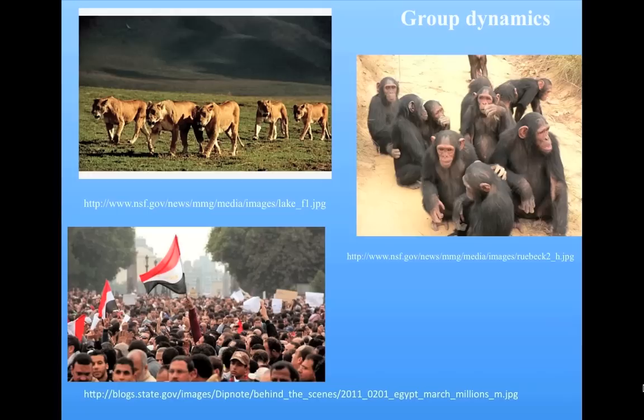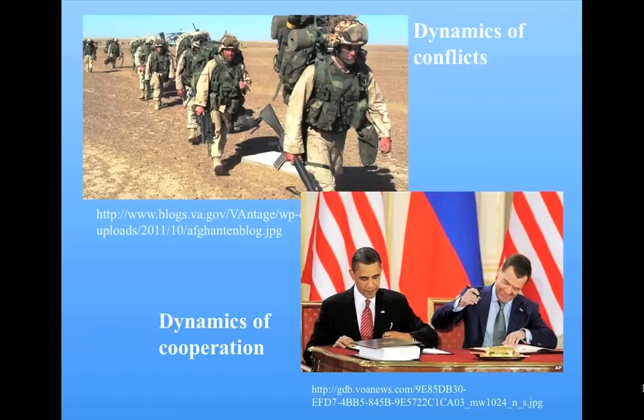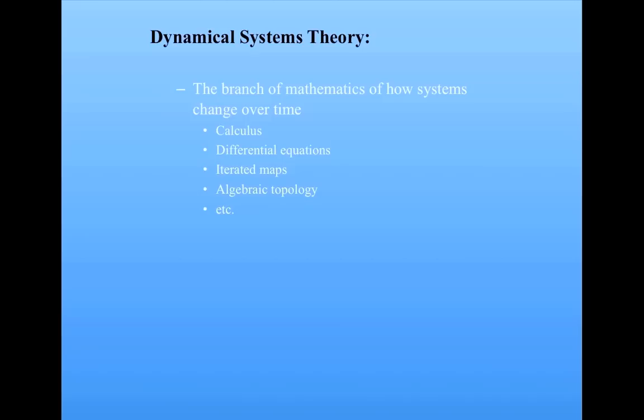Group dynamics looks at how groups of animals or humans form and how they work together to accomplish tasks. There's also a lot of work on social dynamics that includes the dynamics of conflicts and the dynamics of cooperation, for instance, among nations. Dynamics is a very general field, and it's been a huge triumph of mathematics and science to develop quantitative tools, such as differential equations, that can be applied to explain so many different phenomena. Dynamical systems theory is the general area of mathematics concerned with dynamical systems — it's the branch of mathematics which describes how systems change over time, and it includes many sub-branches including calculus, differential equations, iterated maps, and so on.